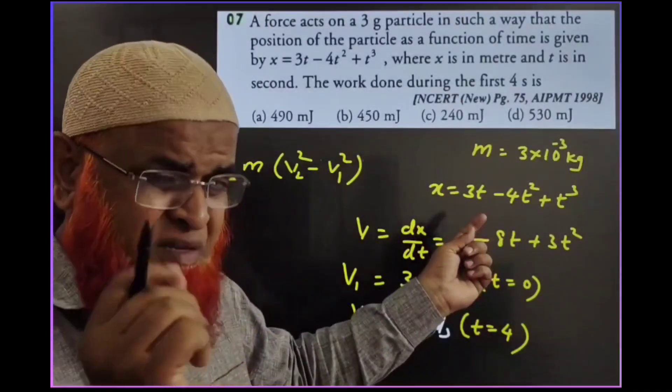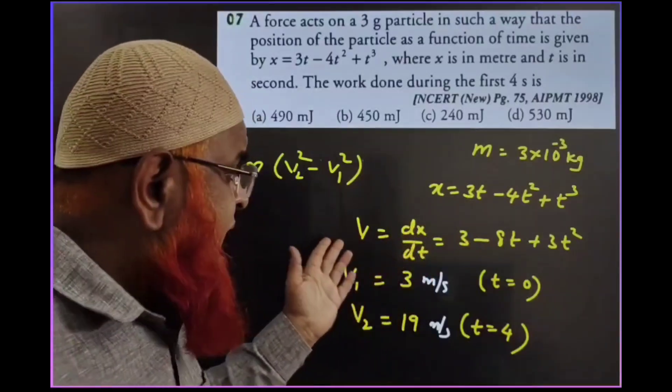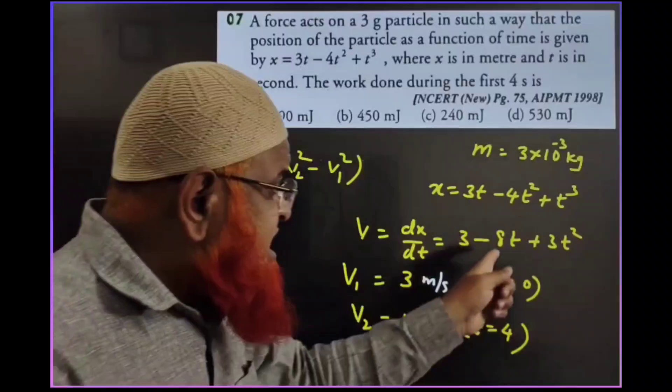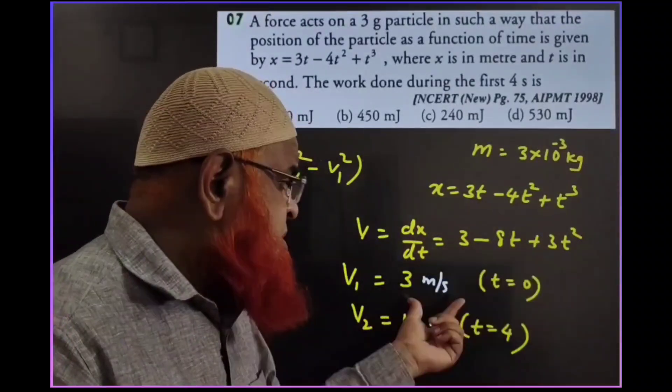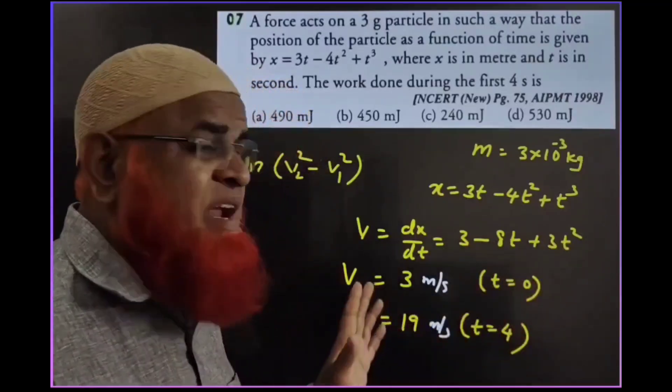I am doing only one simple thing, I am differentiating displacement with respect to time, I am getting velocity as this equation after differentiating. Then I will take time t equals 0 and substitute here. Then I will get v1 equals 3 meter per second. Again I will take t equals 4 and substitute here. I am getting 19 meter per second.